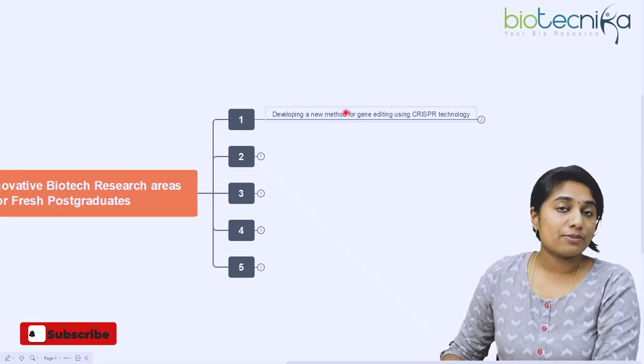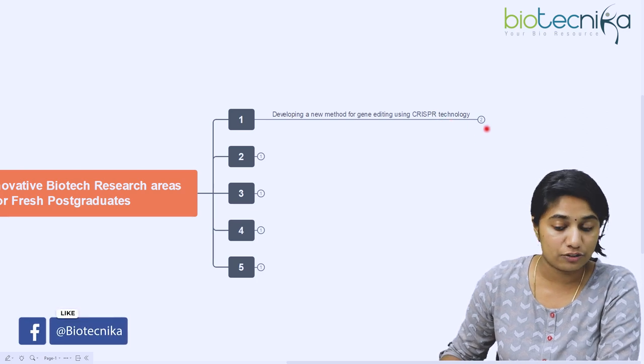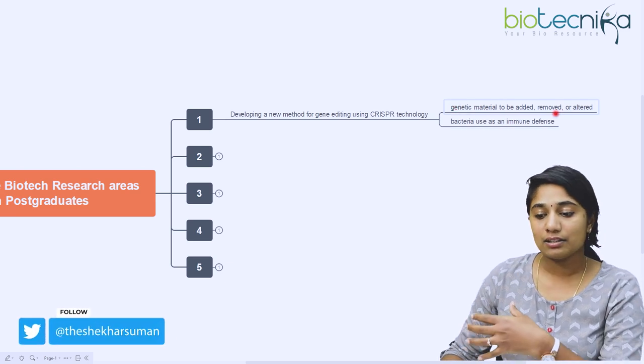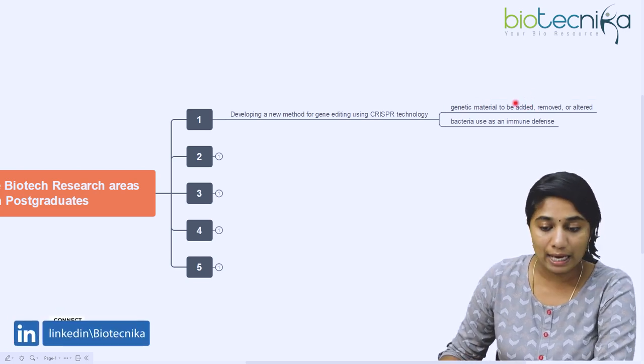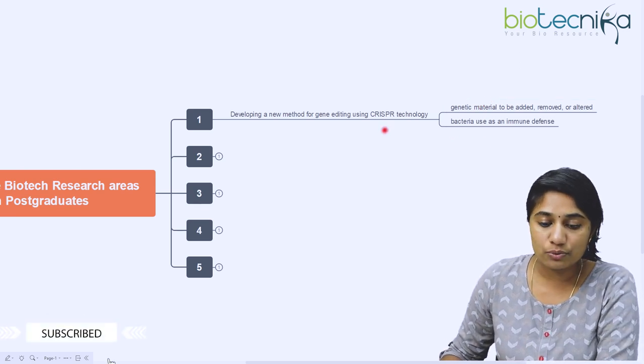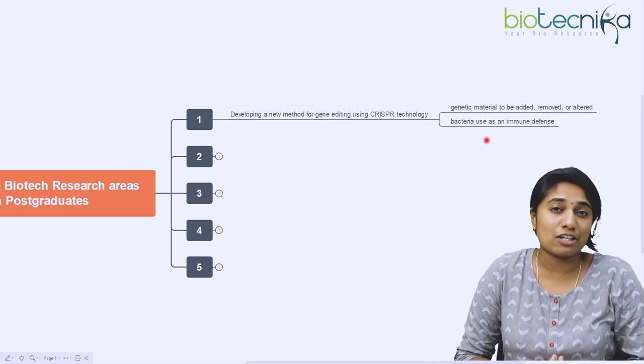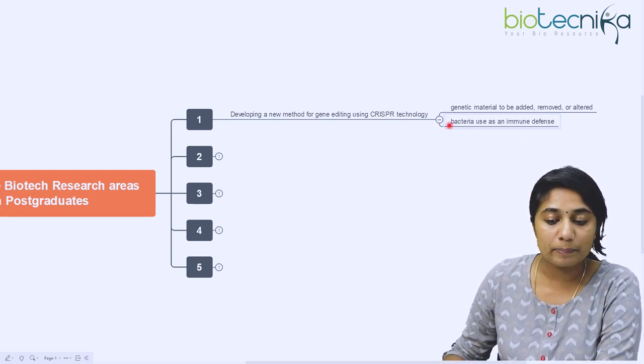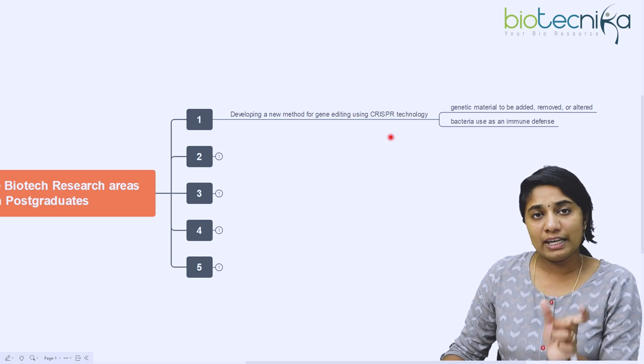The first topic is developing a new method for gene editing using CRISPR-Cas9 technology. Gene editing is adding, removing or altering the genetic material in humans or animals. We use CRISPR-Cas9 technology for this. This technology is a naturally occurring system in bacteria - it's the immune defense system used by bacteria. In this process, CRISPR is a particular segment in the DNA of the virus.